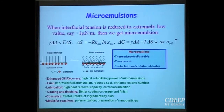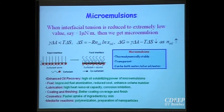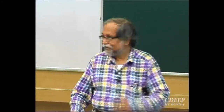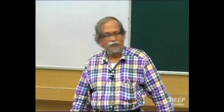Microemulsions are thermodynamically stable. Stability depends on the interfacial energy, which depends on interfacial tension. You reduce interfacial tension almost to zero — not exactly zero. The interfacial energy is reduced, but when a drop breaks, entropy increases. So entropy generation balances the small increase in energy, giving a thermodynamically stable droplet size. The result is a transparent material because the drop size is extremely small and does not scatter light.